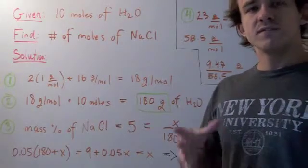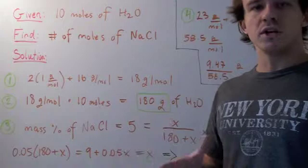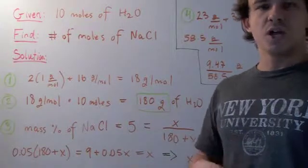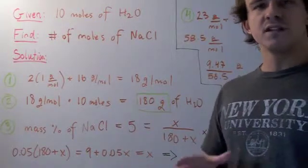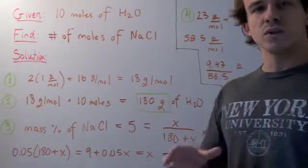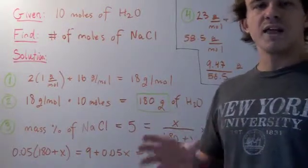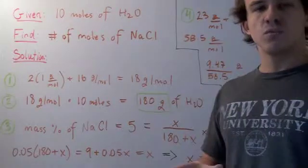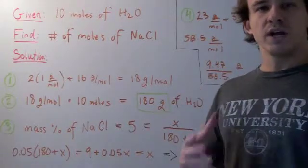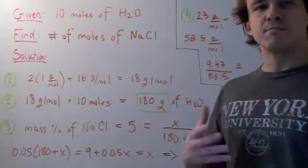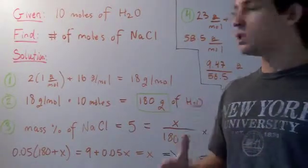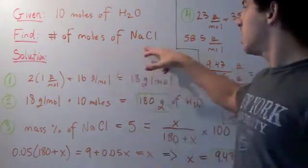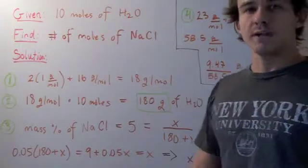In this problem, we have 10 moles of water in a beaker. We need to find the number of moles of sodium chloride that we need to add to our 10 moles of water to create a 5% by mass solution of sodium chloride.